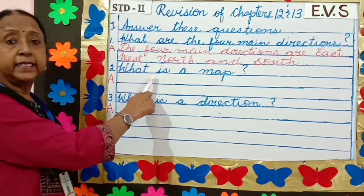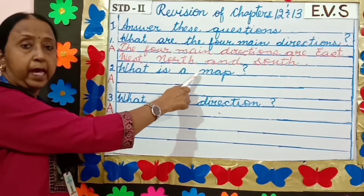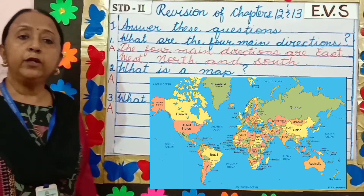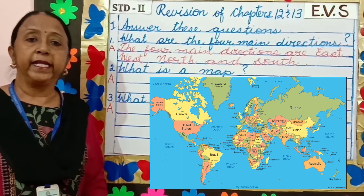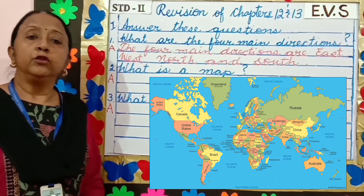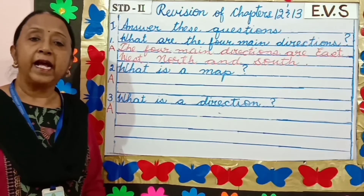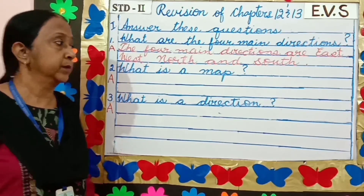What is a map? A map is a drawing of a place, usually drawn on a flat surface.